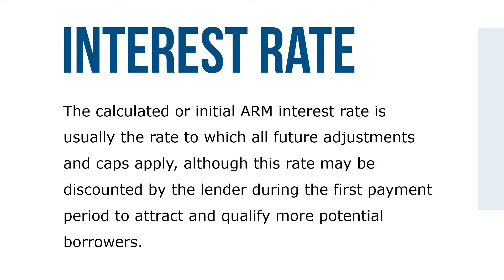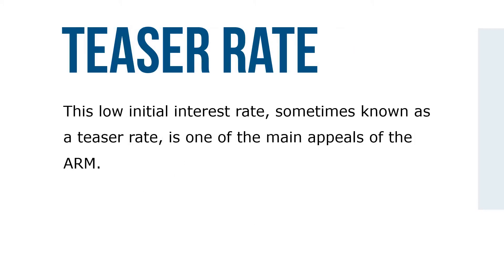The calculated or initial ARM interest rate is usually the rate to which all future adjustments and caps apply, although this rate may be discounted by the lender during the first payment period to attract and qualify more potential borrowers. This low initial rate, sometimes known as the teaser rate, is one of the main appeals of the ARM.